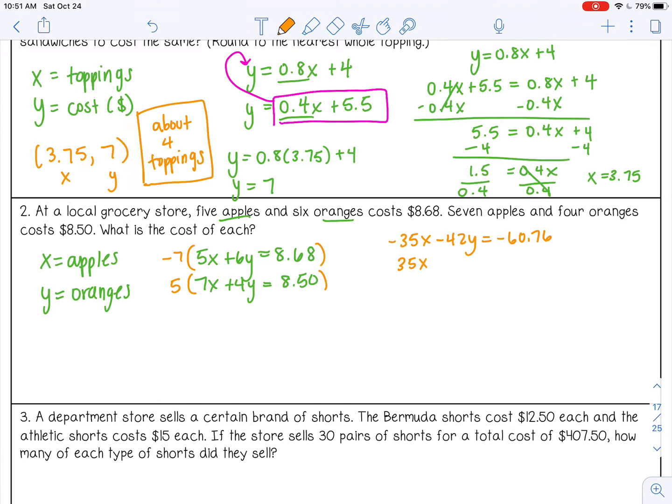So positive 35x, 5 times 4, that's 20y. 5 times 8.50, that's 42.50. Okay, so these are going to cancel. Negative 42 plus 20, that's negative 22y. Negative 60.76 plus 42.50, that's negative 18.26. I'm going to divide by negative 22 on both sides. So y equals 0.83.